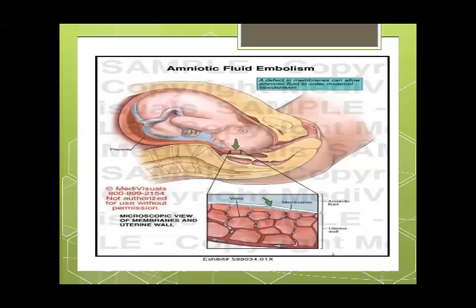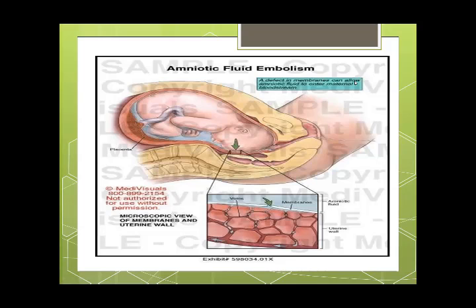As shown in this diagram, amniotic fluid can enter the uterine cavity through a breach in the uterine wall. There is a breach at the interface between the uterine wall and the amniotic cavity, allowing the amniotic fluid to enter the maternal circulation. A defect in the membrane or the uterine wall can allow the amniotic fluid to enter the maternal bloodstream.